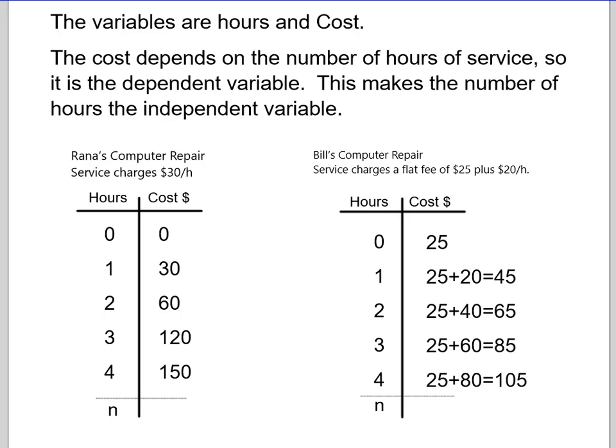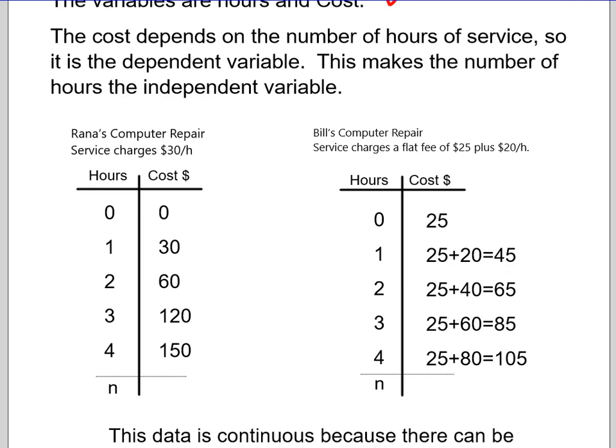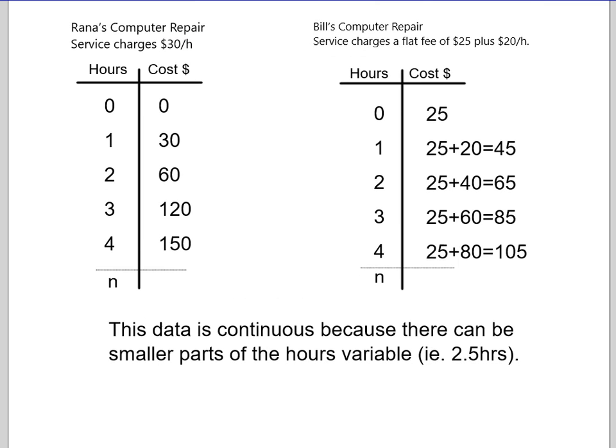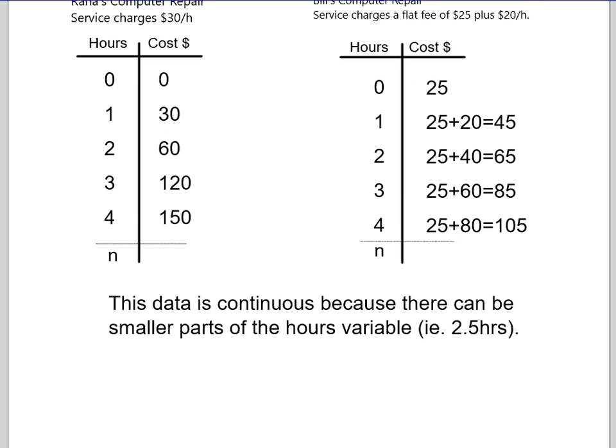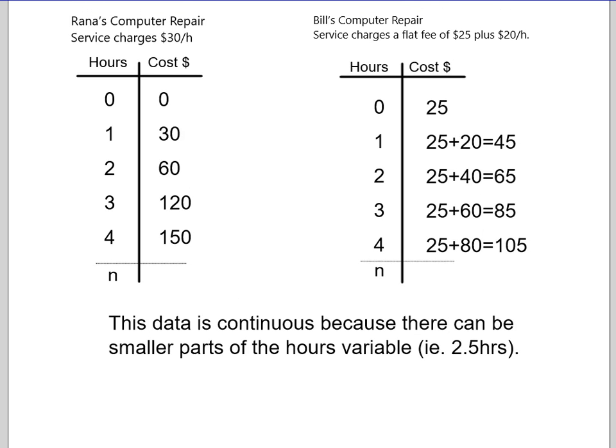Okay, welcome back. I've got the answers here, so let's just go through really quickly. The variables are hours and cost. The cost depends on the number of hours of service, so it is the dependent variable. This makes the number of hours the independent variable. Okay, so if I scroll up a little bit here. Rana's computer service, I've got a table of values for her. Okay, so because she's $30 an hour, if she works zero hours, she gets paid zero dollars. Okay, and right away you can see a couple of things that tell us a lot about whether these are direct or partial. Rana's has a zero zero entry, so we should know this is direct. Bill has $25 attached to the zero, so we know this is partial.